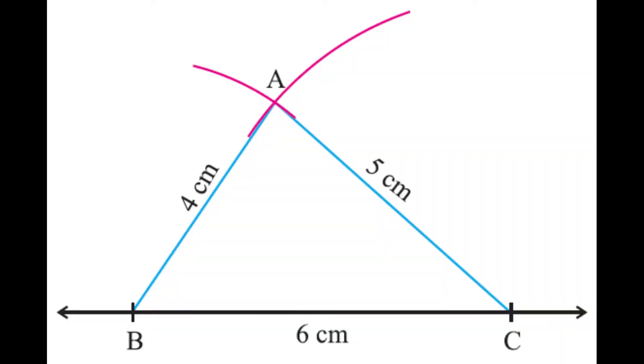Can you construct a triangle of sides 4, 5, and 6 by using the compass only once? Think about it. It seems impossible, doesn't it? You need to have an intersection of at least two arcs to construct a triangle.